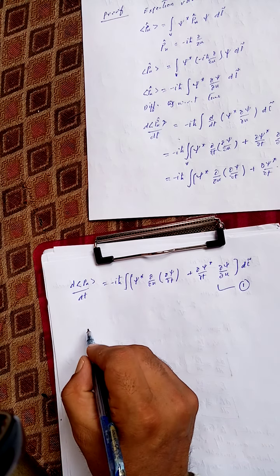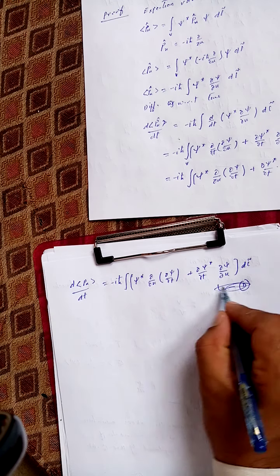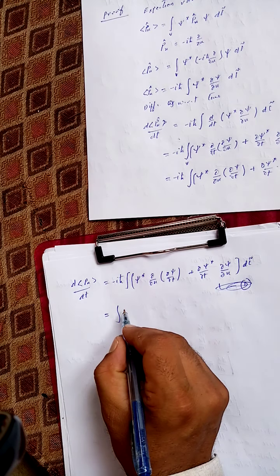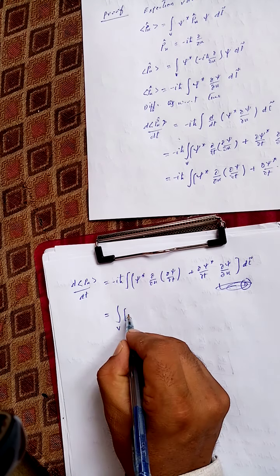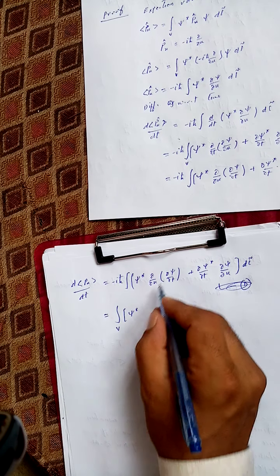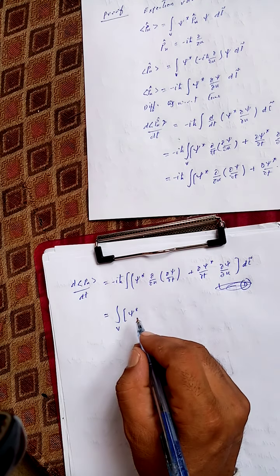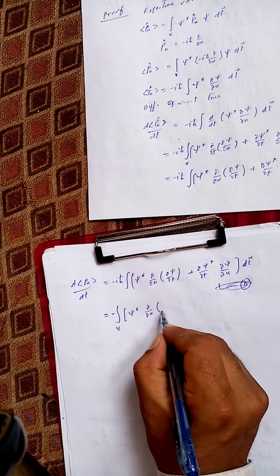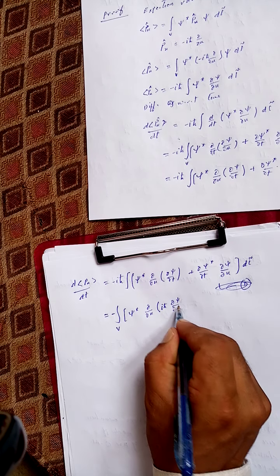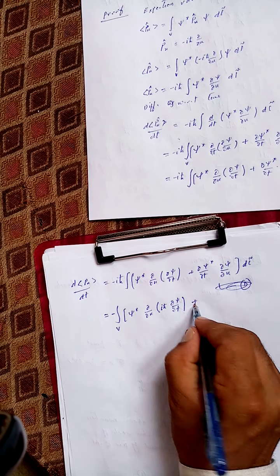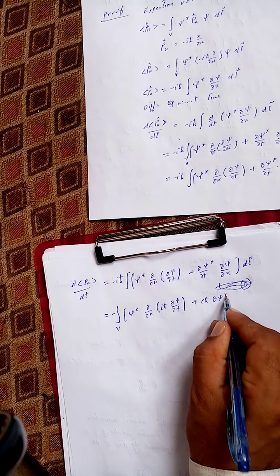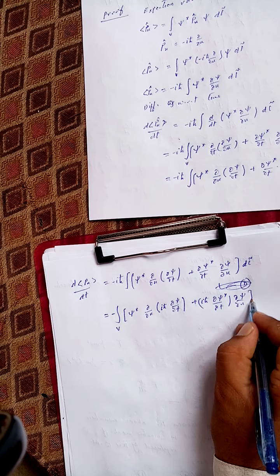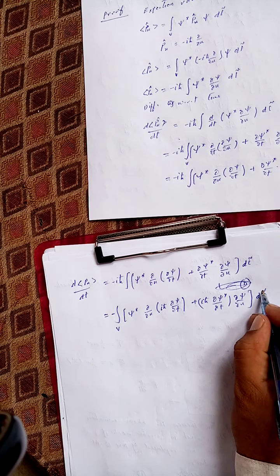From the Schrödinger equation, we can write this more compactly by bringing -iħ inside the integral. We get d⟨p_x⟩/dt = -∫ [ψ* ∂/∂x(iħ ∂ψ/∂t) + (iħ ∂ψ*/∂t)(∂ψ/∂x)] dτ. This is equation number one. Now, the time-dependent Schrödinger equation is iħ ∂ψ/∂t = -ħ²/2m ∇²ψ + Vψ, which is equation number two.